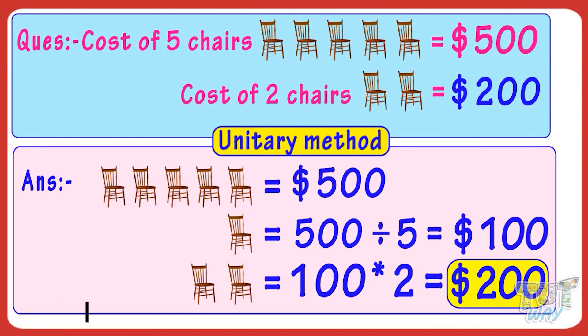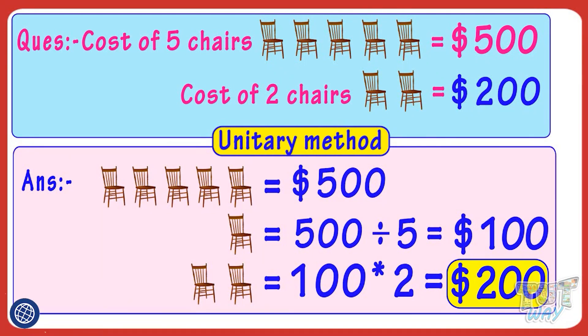So this is the unitary method, where we first find the cost of one item and then the cost of the desired number of items.